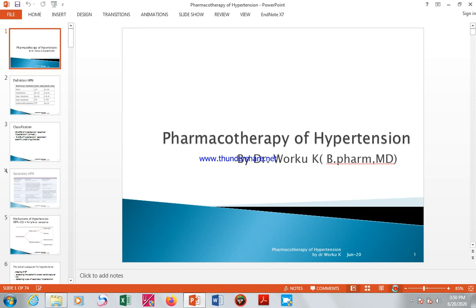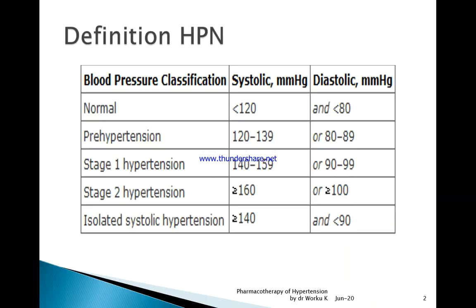In hypertension, there are terms you need to know. The first is normal: systolic blood pressure less than 120 and diastolic blood pressure less than 80 mmHg. Pre-hypertension lies up to 139 mmHg systolic and up to 89 mmHg diastolic.